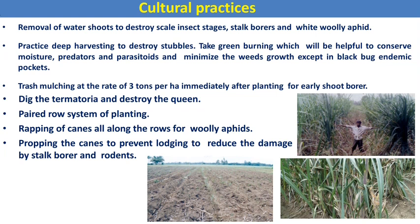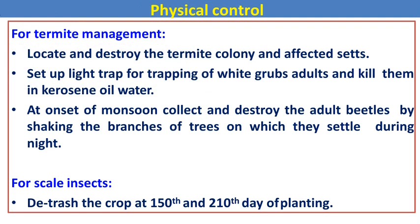For termite management, dig out termitaria present around the fields and kill the queens. Set up light traps for trapping adult white grubs and killing them in kerosene water, as white grubs are strongly attracted to light. At the onset of monsoons, collect and destroy adult beetles by shaking branches of trees like neem, ber, bael, babul, sheoga, and tamarind present around the field on which they settle during nights.